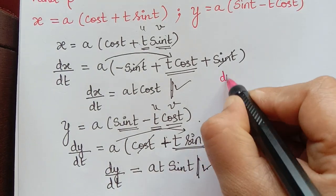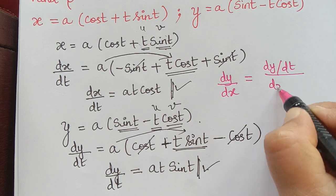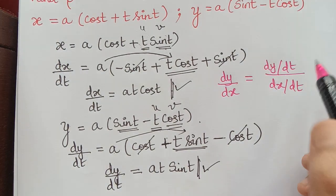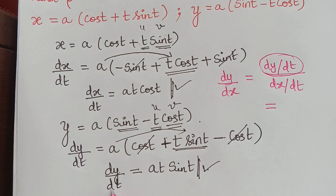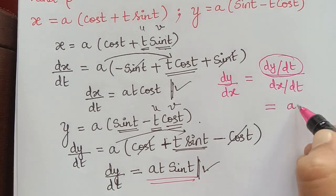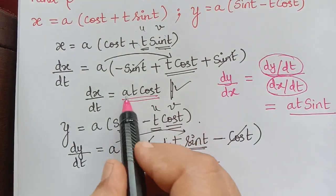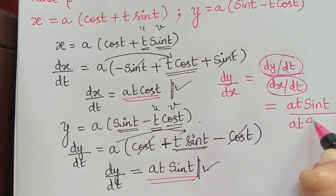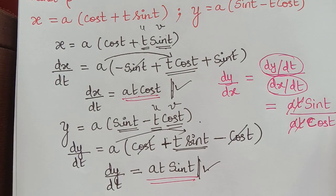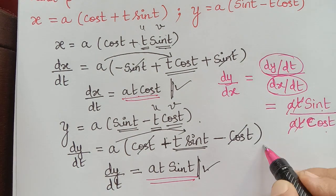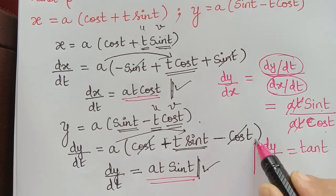Using dx/dt and dy/dt, we find dy/dx. For parametric equations, dy/dx = (dy/dt) / (dx/dt). Substituting: dy/dx = at sin t / at cos t. The a and t cancel, and sin t / cos t = tan t. Therefore, dy/dx = tan t.